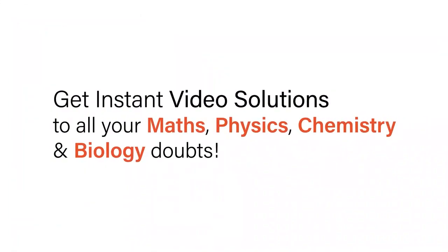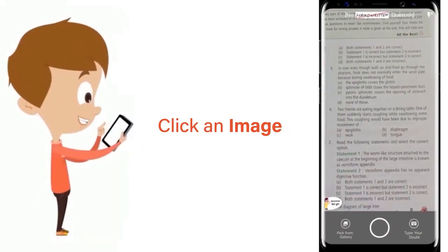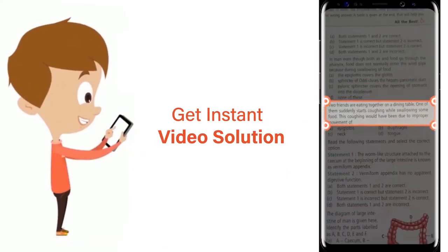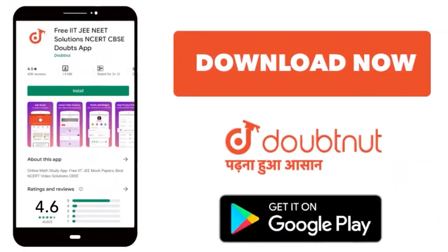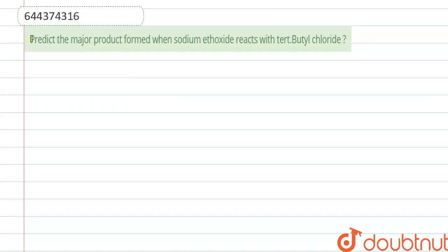With Doubtnut, get instant video solutions to all your math, physics, chemistry, and biology doubts. Just click the image of the question, crop the question, and get instant video solution. Download Doubtnut app today. Everyone, here the question is: predict the major product formed when sodium ethoxide reacts with tertiary butyl chloride.